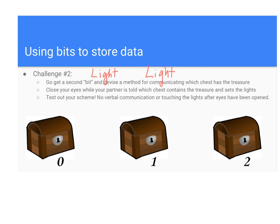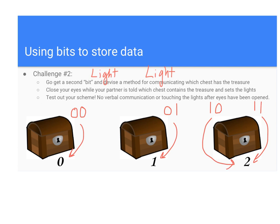Eventually most groups would figure out: if the first light is off and the second light is off, that represents treasure chest zero. If the first light is off and the second light is on, that represents chest one. If both lights are on, that represents chest two. There's another solution: first light on, second light off could represent two.